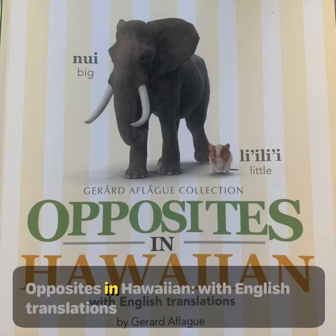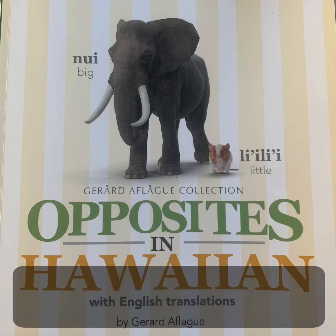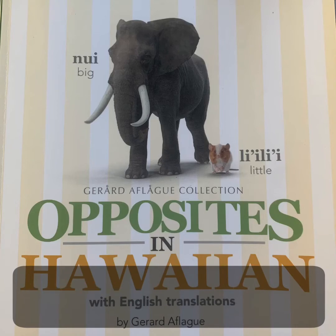Opposites in Hawaiian, with English translations, by Gerald Aflug.